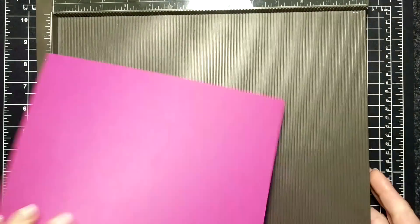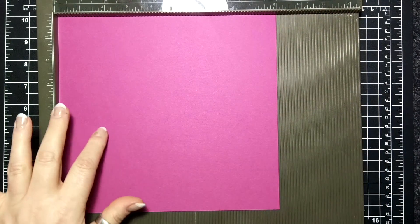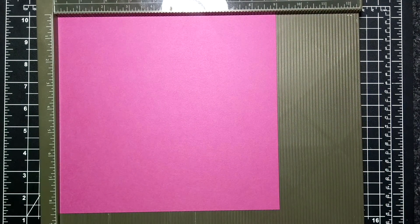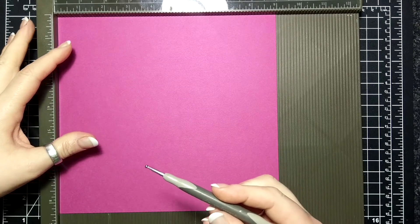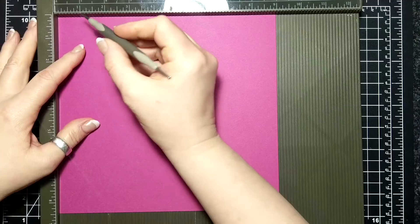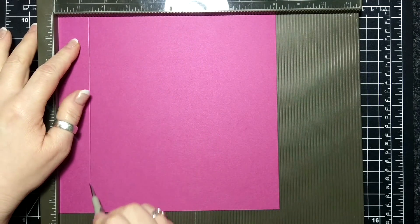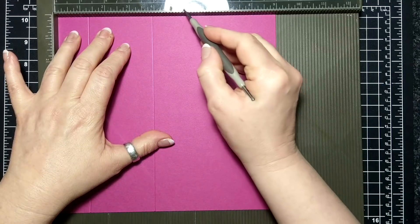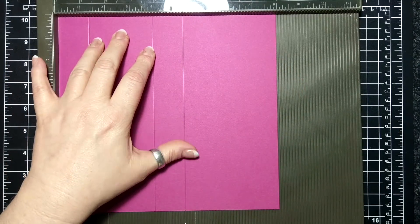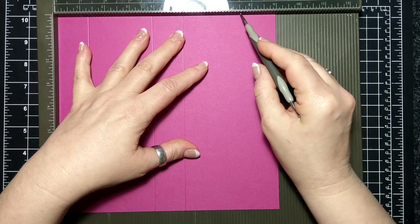I have a piece of eight and a half by nine inch cardstock. This happens to be Berry Burst. On the long side, I am going to score at one and a quarter, three and seven eighths, five and one eighth, and seven and three quarters.